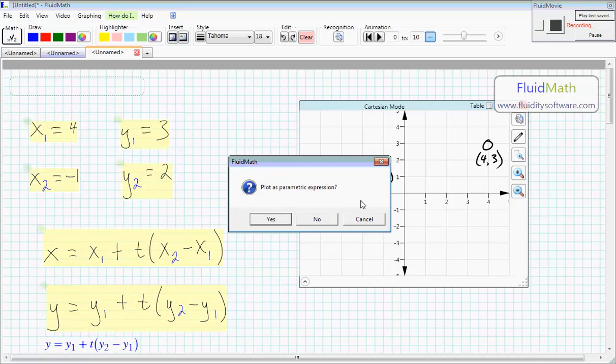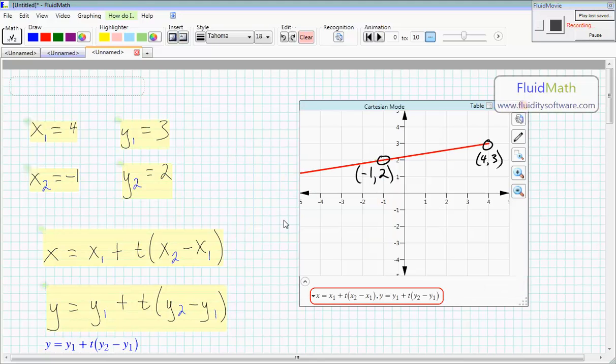Now if we plot this as a parametric equation, and let's change, make sure the value of t extends past what we want to see, we can see that the line passes through those points.